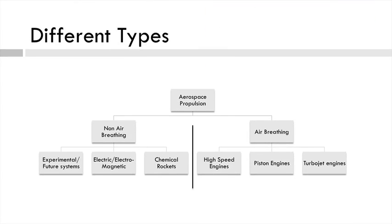The different types of aerospace propulsion fall into two classes: air breathing and non-air breathing. Essentially, one uses air from the atmosphere and the other one doesn't. As you might expect, air breathing is an atmospheric-based propulsion system, while non-air breathing is generally used in space, although you can use non-air breathing in the atmosphere as well.